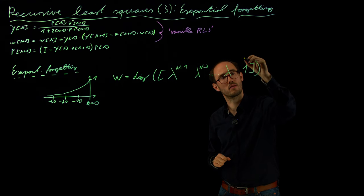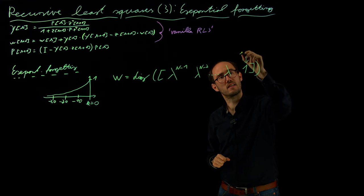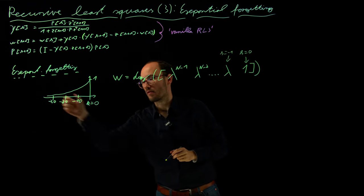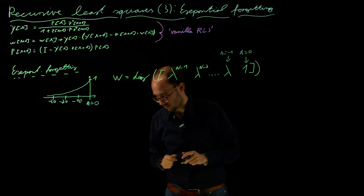Right, so this would be here k equals 0, and this would be basically k equals minus 1, so basically if we are here and looking backwards into the past.